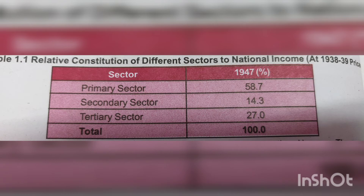So we can say that the primary earning activities were that of agriculture and primary sectors. The second most contributing sector was the tertiary sector at 27 percent, followed by the secondary sector at 14.3 percent. Thus, we can say that the primary sector was the dominant sector of the Indian economy at the time of independence.